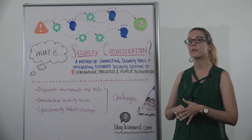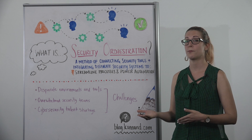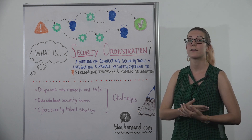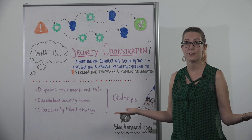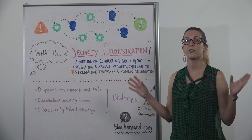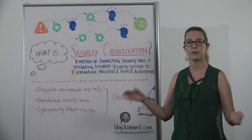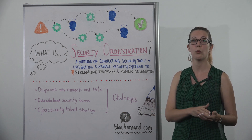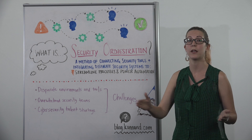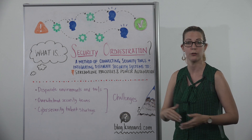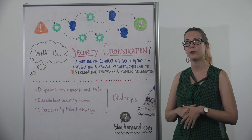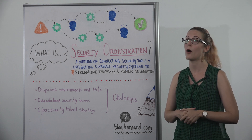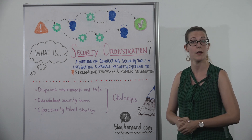Orchestration and automation are natural fits to help solve these challenges. The way I like to look at it is orchestration is process-based and automation is task-based. You can automate any series of tasks, but automation alone is just task-based. With orchestration, the process behind it tells you what automated tasks to run and in what order. A use case to help you understand these concepts is a problem almost every organization faces today: phishing.